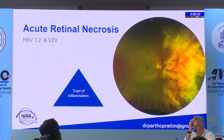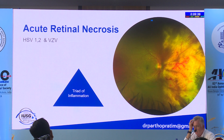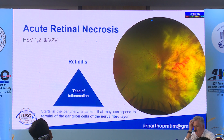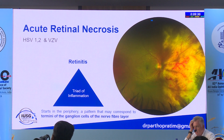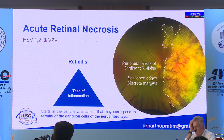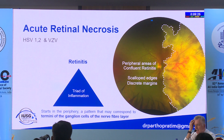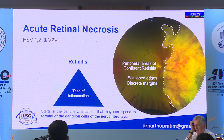Acute retinal necrosis presents with a triad of inflammation. First, retinitis that starts in the periphery — a pattern corresponding to the termini of the ganglion cells of the nerve fiber layer through which the virus propagates. The retinitis is characteristically peripheral, confluent, with scalloped edges and discrete margins.